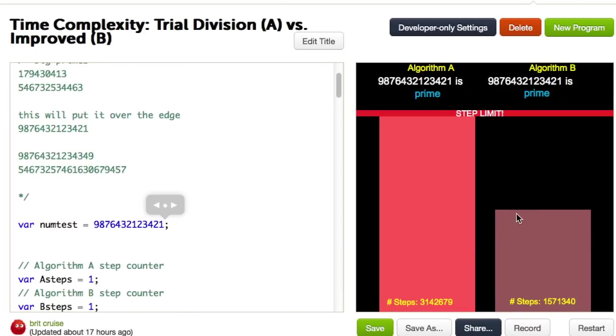Algorithm B, as we know, is taking half as many steps in the worst case. But it's still taking many steps here because it's the worst case, right? So we're getting close to crashing here. And this is not a very long prime. We're still way under 15 digits.